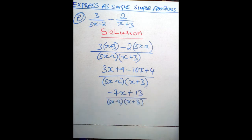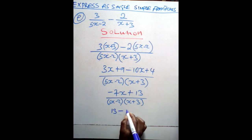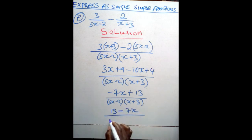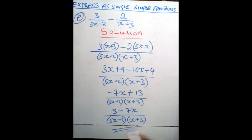From there, you cannot factorize anything and you cannot cancel anything. So just rewrite it by starting with a positive: 13 minus 7x over (5x minus 2)(x plus 3). This stands out to be our final answer.